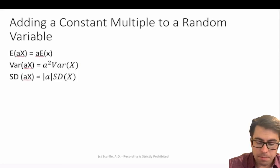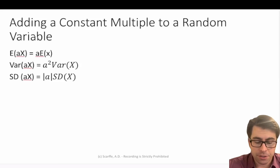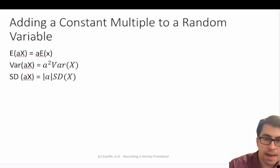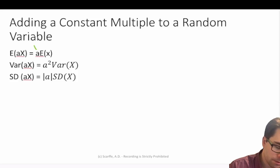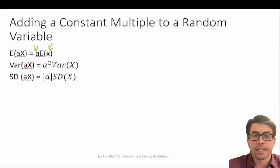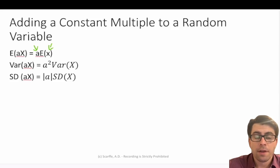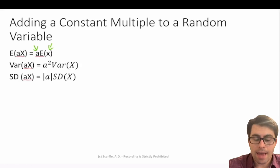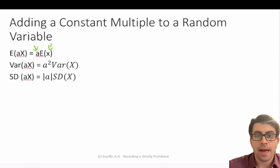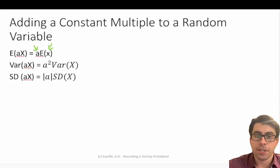When we add a constant multiple to a random variable, we can calculate our expected value and standard deviation quite quickly. The expected value of ax is equal to a — that's our constant multiple — times our expected value of x. The variance of ax is equal to a squared times the variance of x. And finally, the standard deviation of ax is equal to the absolute value of a times the standard deviation of x.